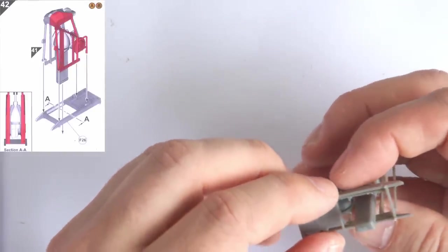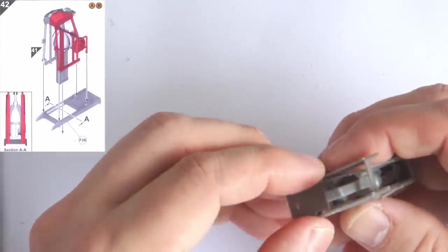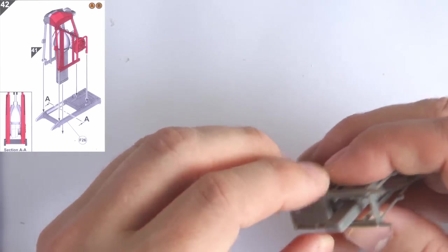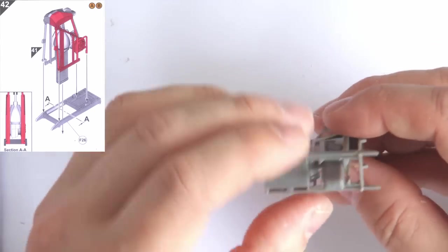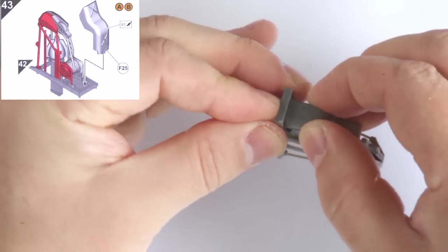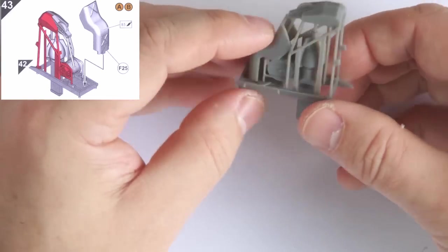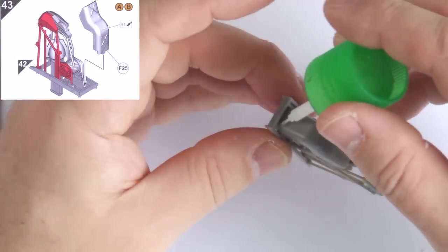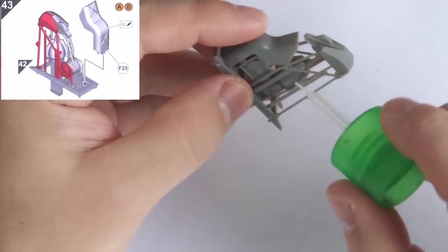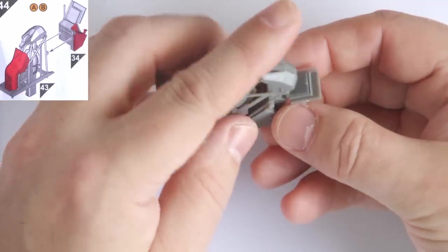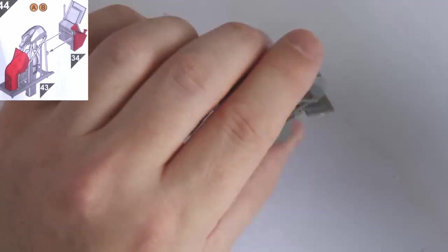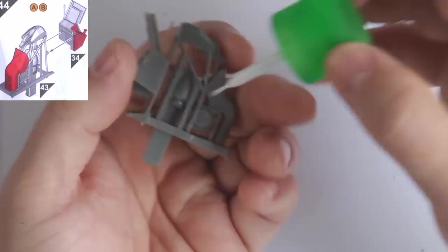The sonar winch assembly itself is a beautifully rendered thing, and it seems almost a crime that such a wonderful amount of detail is going to be almost entirely hidden in the completed aircraft. Step 44 unites the winch operator's station with the completed sonar winch assembly, and we can put that aside for the moment.